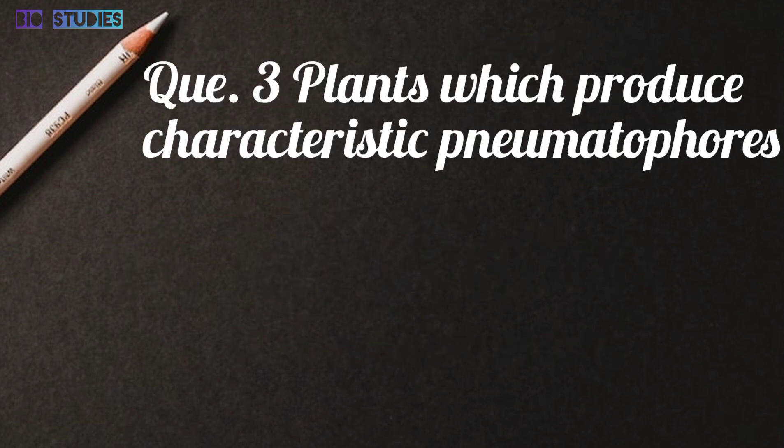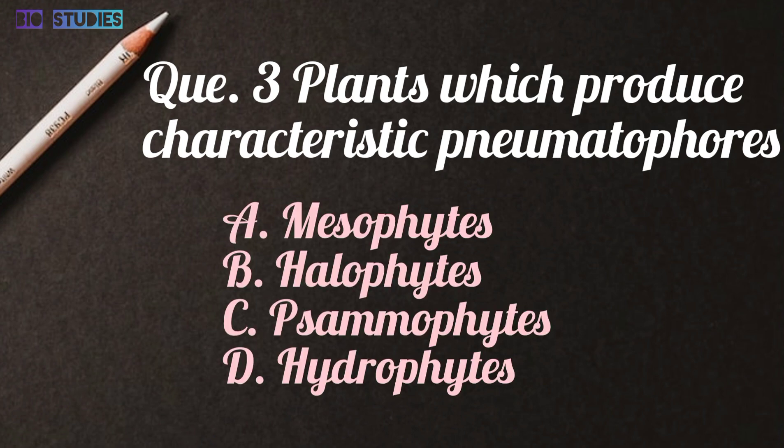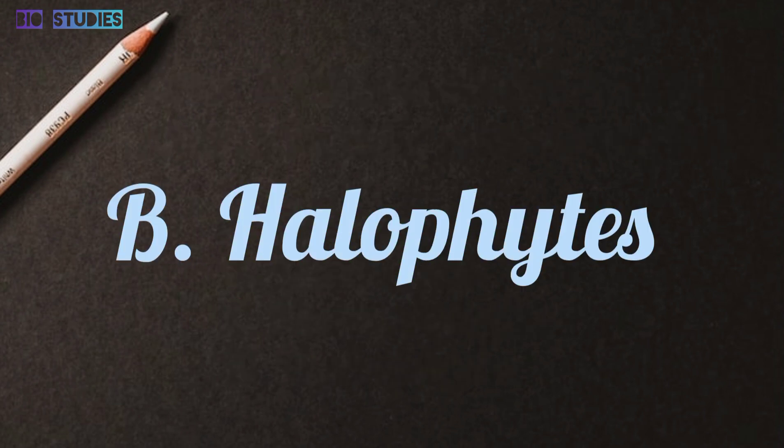Question number 3: Plants which produce characteristic pneumatophores — options are: mesophytes, halophytes, xerophytes, or hydrophytes. And the answer is B: halophytes.